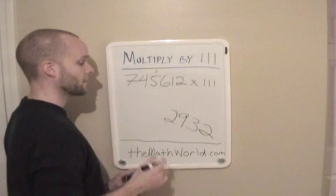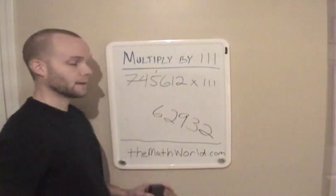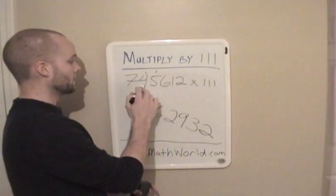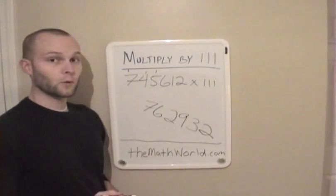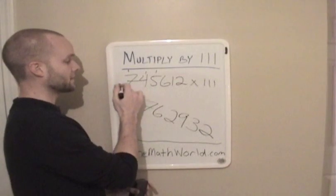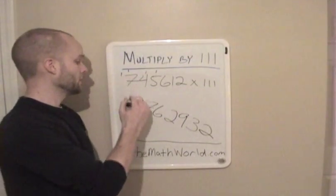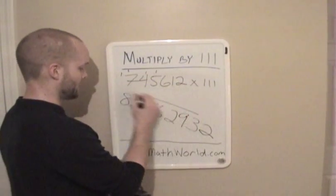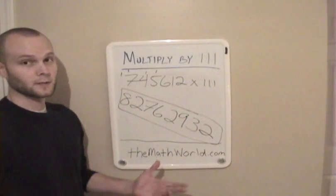So I write down my 2 and carry my 1. Next I add the next three digits: 6 plus 5 plus 4 is 15, plus the carried 1 is 16. Write down 6, carry my 1. Then I add the next three numbers: 5 plus 4 plus 7, which is 16, plus 1 is 17. Write down 7, carry my 1. Next I add 4 and 7 — technically three digits with a zero at the end if you imagine it. So 4 plus 7 plus 0 is 11, plus that carried 1 is 12. Write down 2, carry 1. And our last number: 7 plus the 1 is 8. So the answer is 8,276,293,2 — it's a big number, and that is the answer.